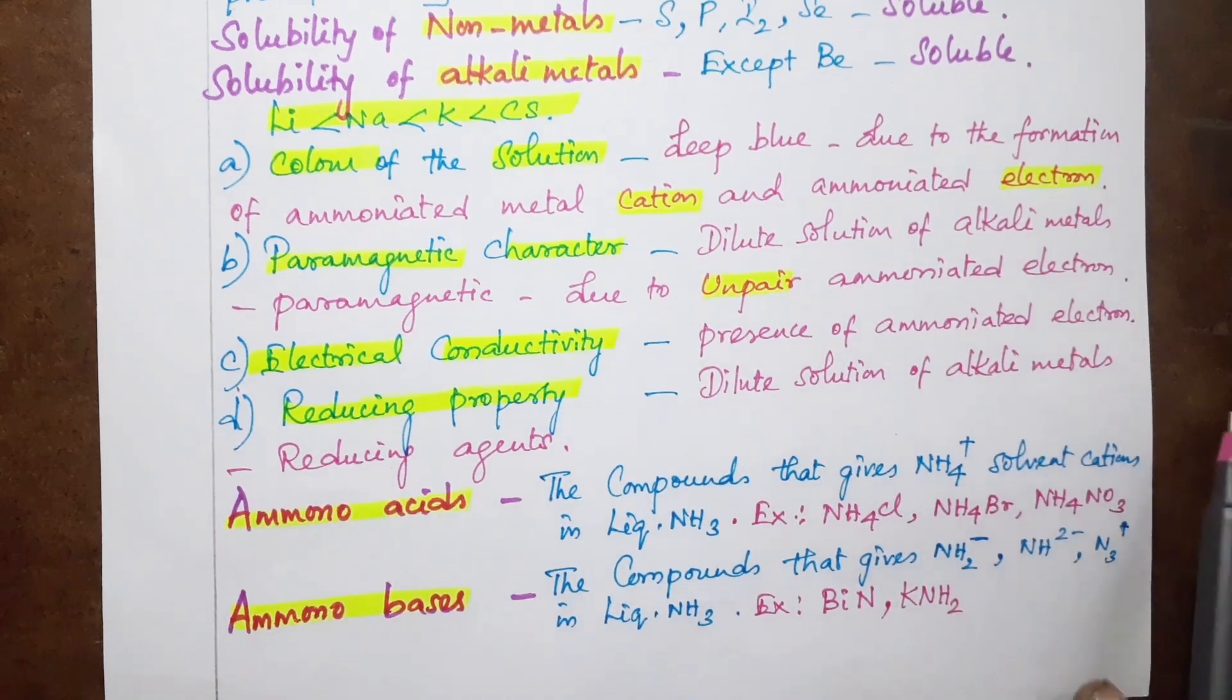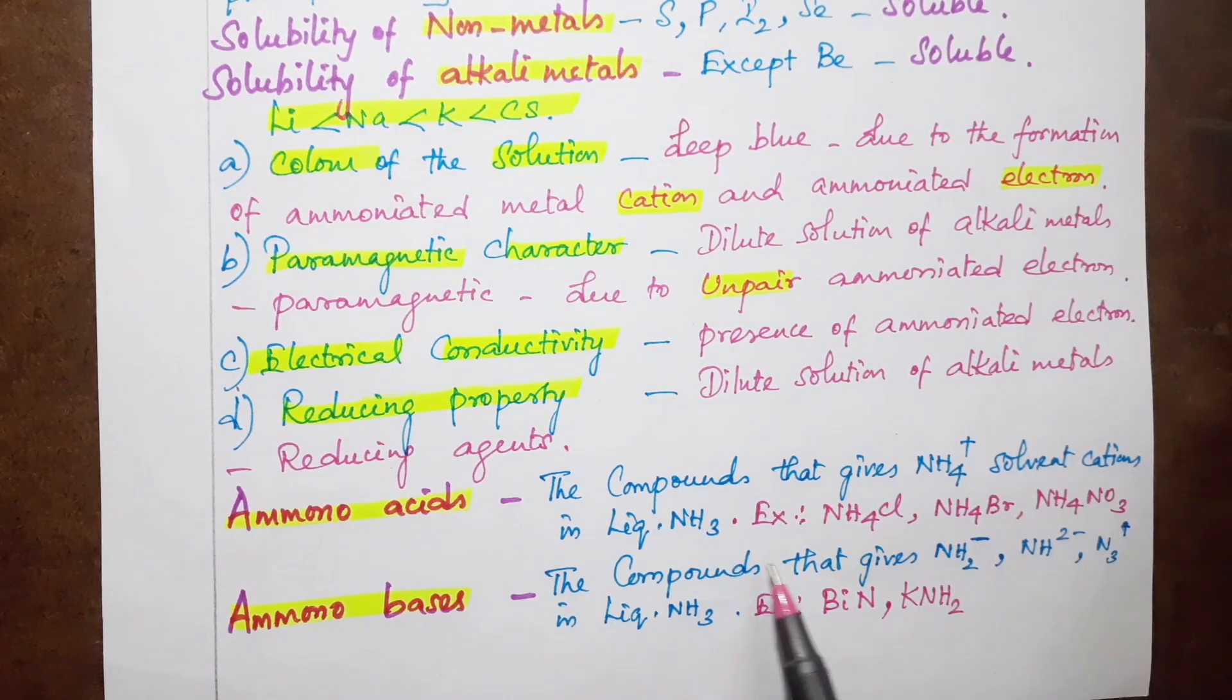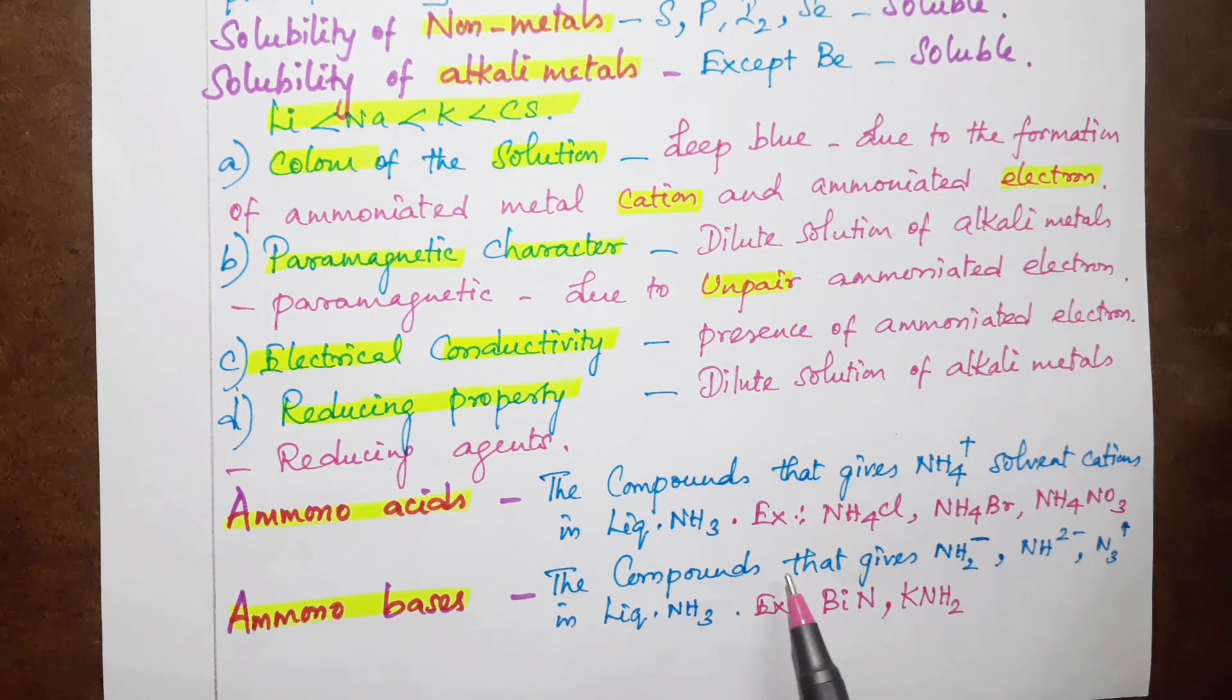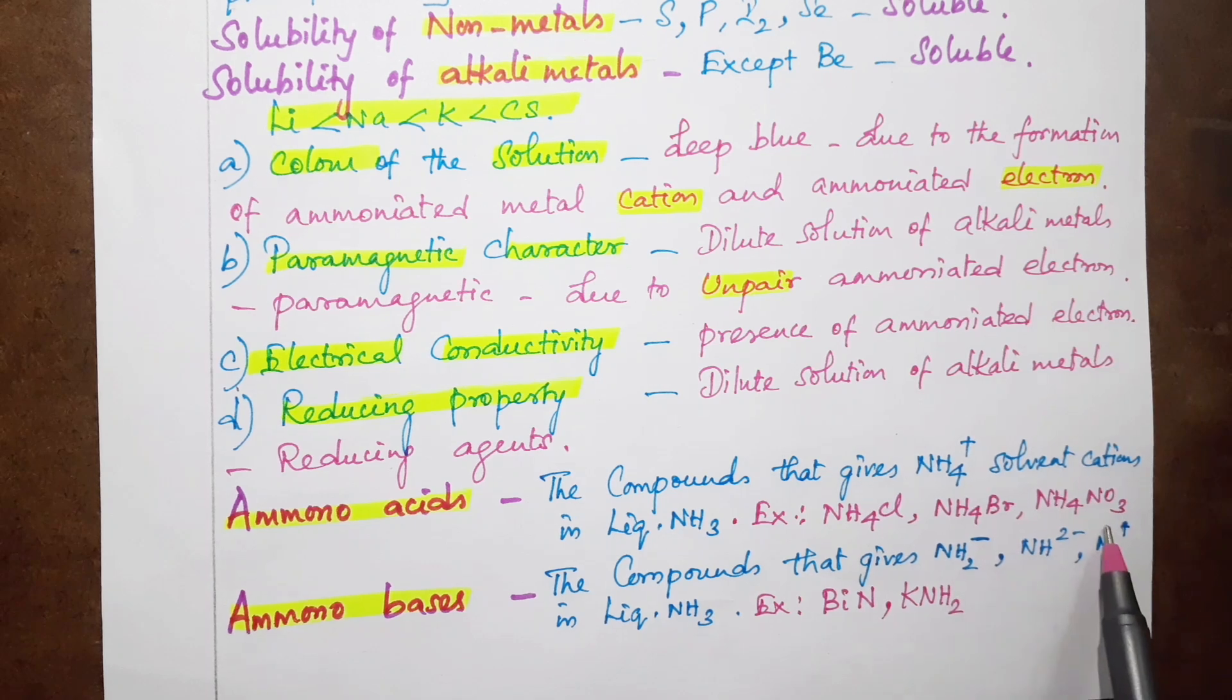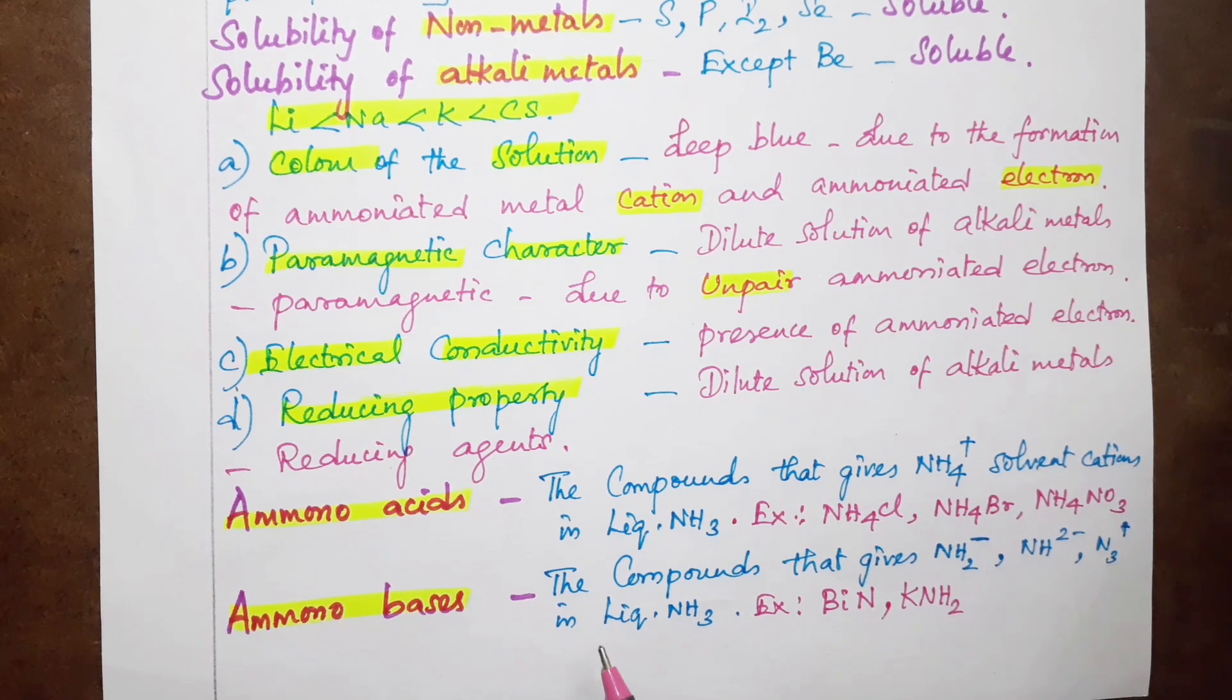Ammonium ion is used as ammono acid. As an example, ammonium chloride, ammonium bromide, ammonium nitrate. For the ammono bases, NH2 ion, amide group, amine group, nitride group - all these compounds are the ammono bases.